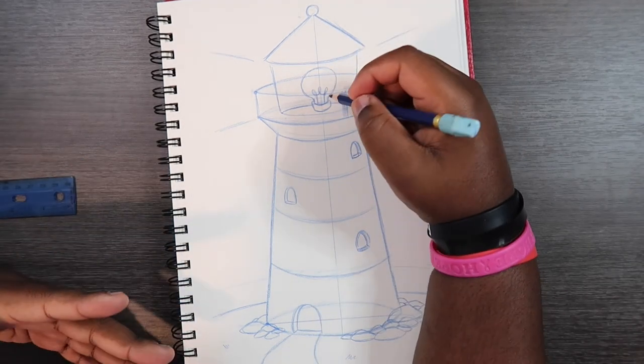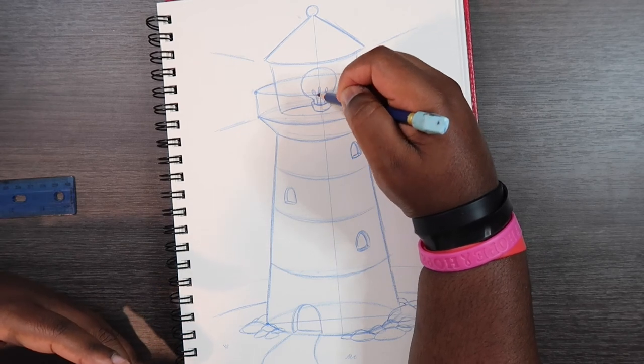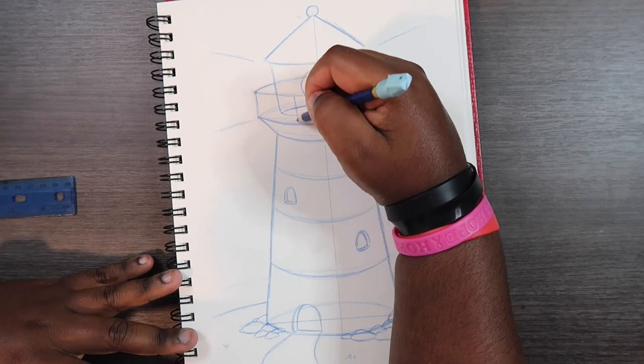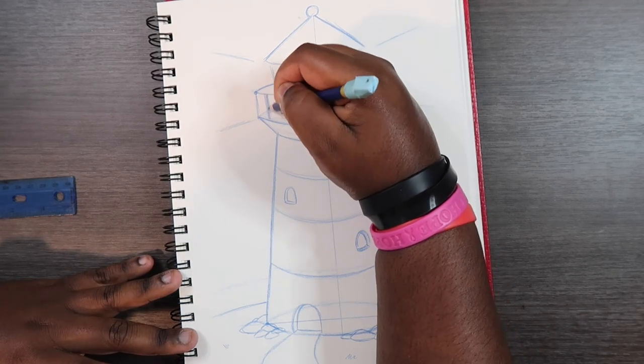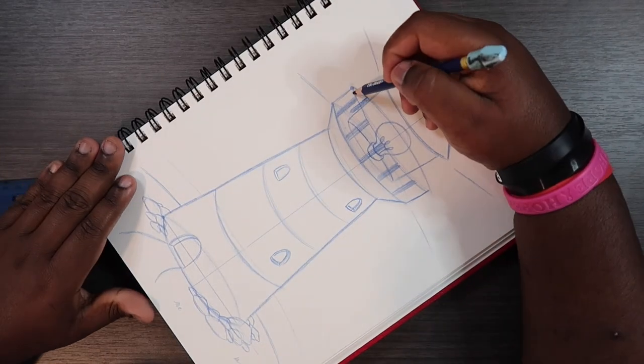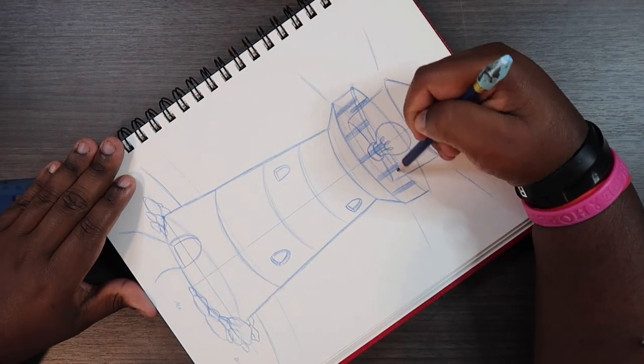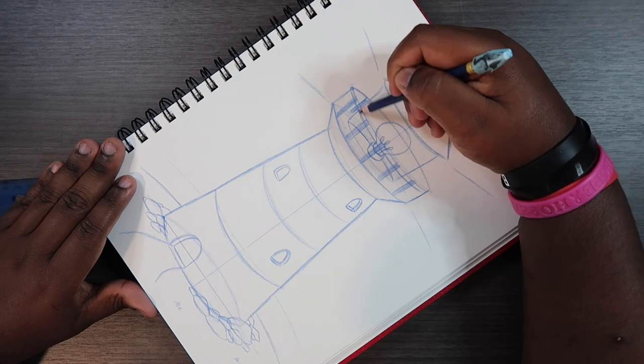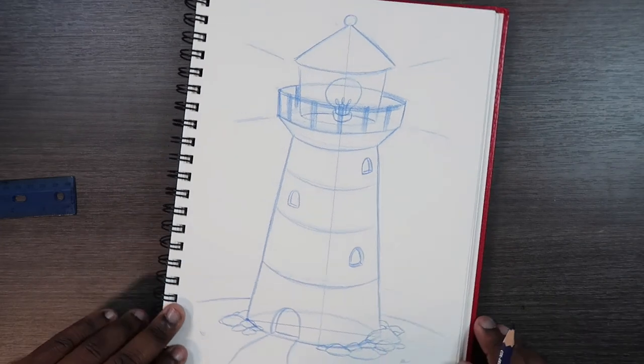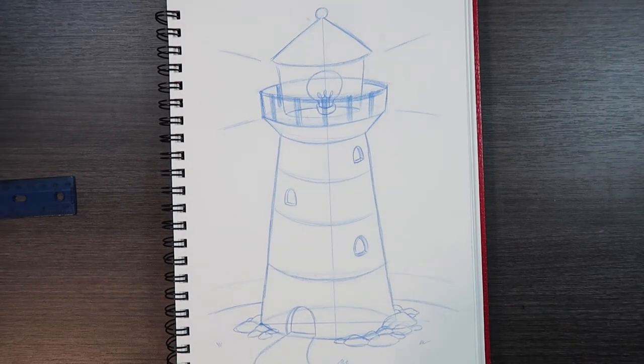Because if I added those before adding the light bulb, it will be kind of hard to see what I'm doing. So that's why I'm going to add this last. I'm also going to make the beam broad too. Alright, and there's your lighthouse. Let me finish the illustration and then come back to you guys.